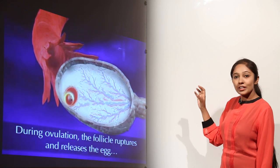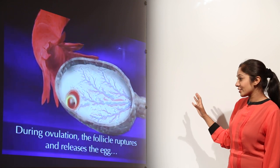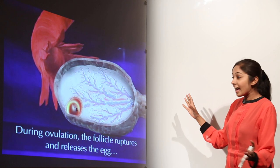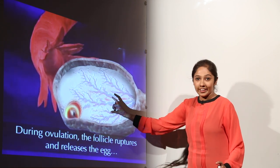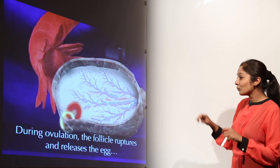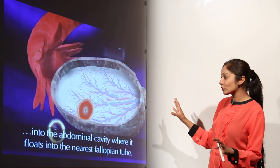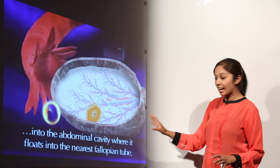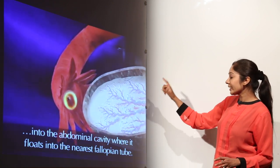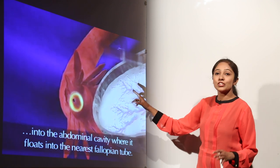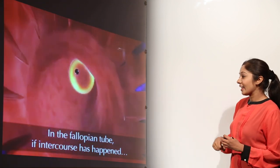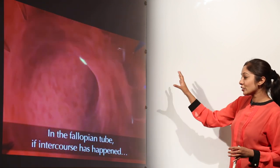During ovulation, the follicle ruptures and releases the egg. The egg is now released into the abdominal cavity, where it floats into the nearest fallopian tube.